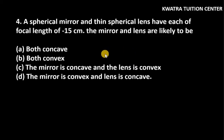Question number 4: A spherical mirror and thin spherical lens each have a focal length of minus 15 cm. The mirror and lens are likely to be? You can see that F is negative. What is negative in which case? It is in concave. Concave mirror and concave lens.